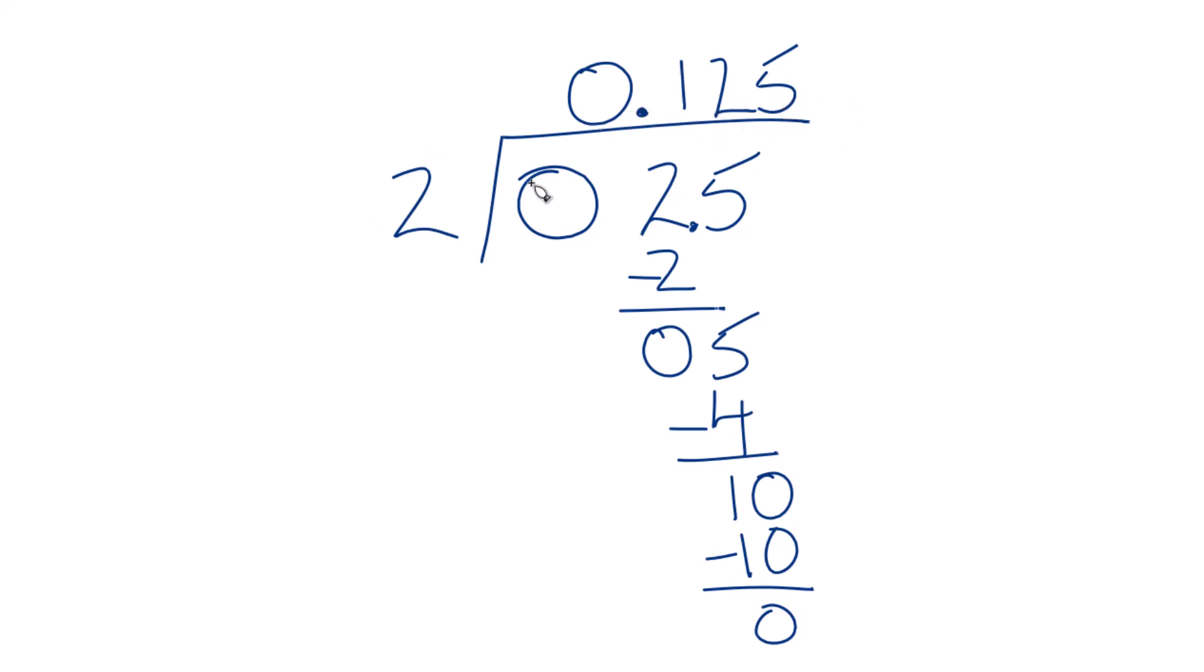And you can check this, if you multiply 2 times 0.125, you would get 0.25. So we know that we've done this correctly. It's Dr. B, dividing 0.25 by 2, the answer, 0.125. Thanks for watchin'.